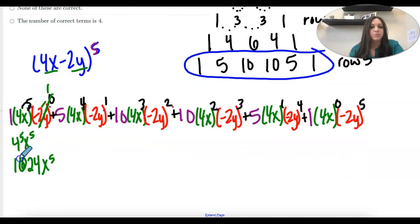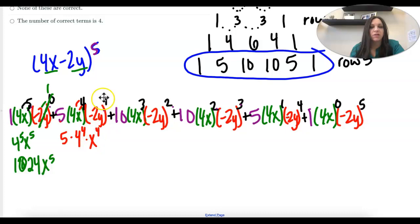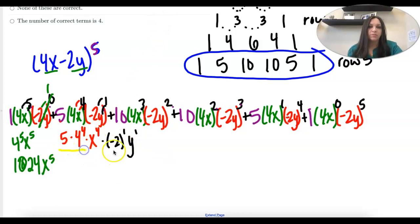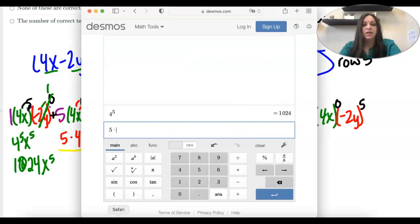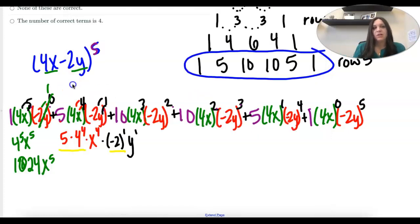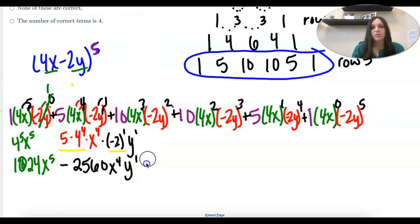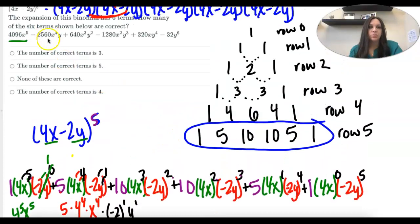Let's keep going. Now we have plus 5 times 4 to the 4th, times x to the 4th, times negative 2 to the 1st power, y to the 1st power. So 5 times 4 to the 4th times negative 2 to the 1st gives us negative 2,560. That's our coefficient, and then x to the 4th, y. You don't have to write the 1st power. So that's our second term, which is correct.